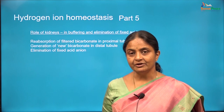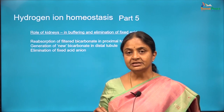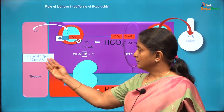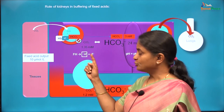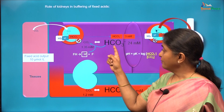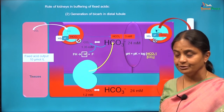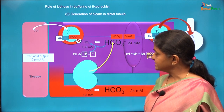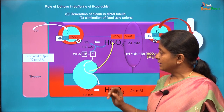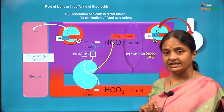Kidneys play a very important role in the buffering of fixed acids, more specifically in providing plasma bicarbonate for buffering of fixed acids. Maintenance of plasma bicarbonate levels is done by three different mechanisms operating in the kidney. The fixed acids would protonate in plasma and the protons of fixed acids will consume plasma bicarbonate and get eliminated therefore.